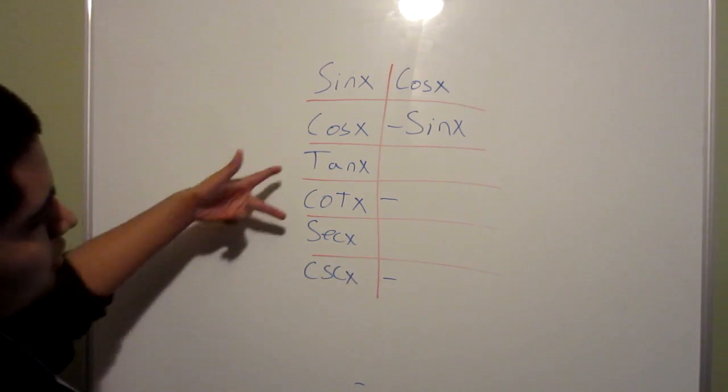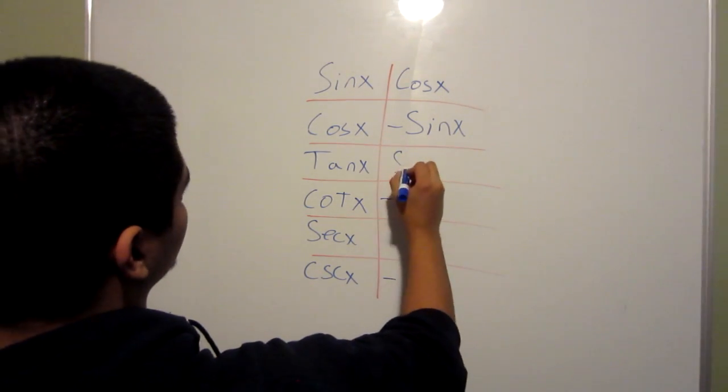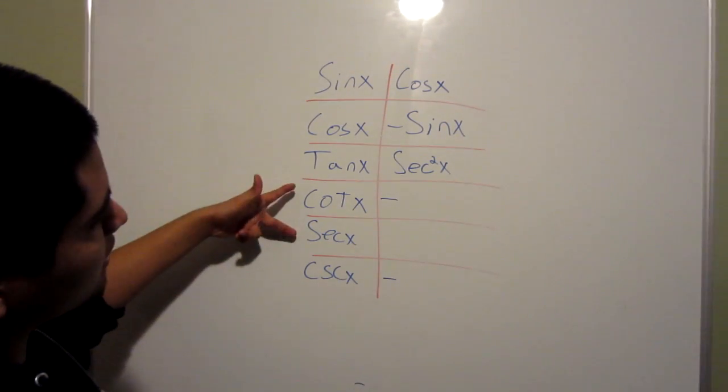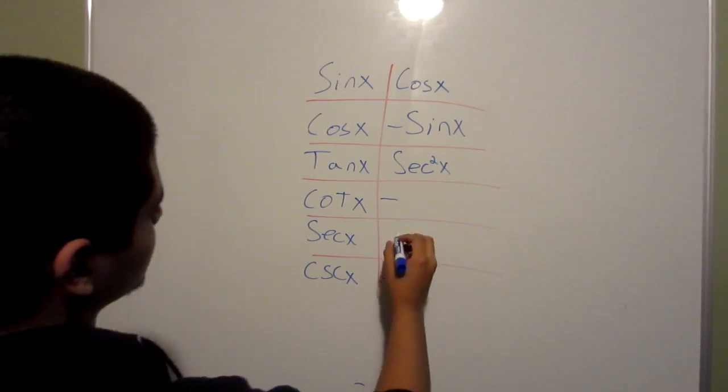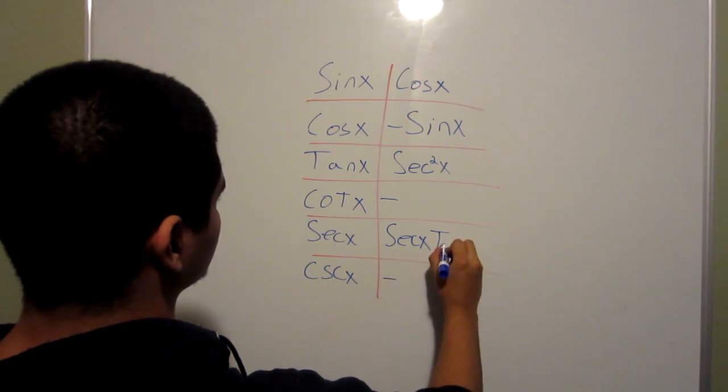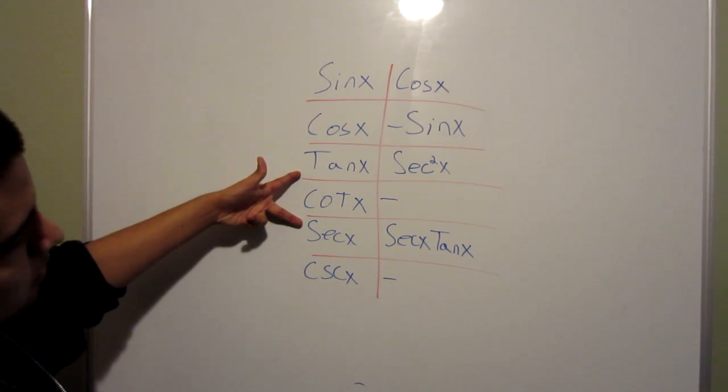How so, because the derivative of tangent is secant squared x. And the derivative of secant x is secant x tangent x. These two were correlated with each other.